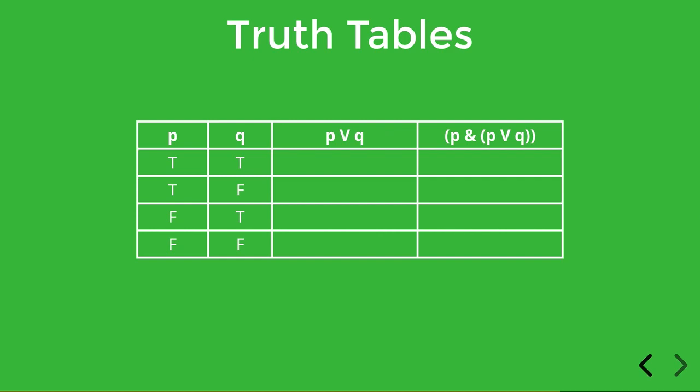So let's look at this example. To get the value of the last column, P and P or Q, we first need to know the value of P or Q, right, because P and P or Q is a conjunction between P on the one hand and P or Q on the other hand. We already have the values of P, that's kind of predetermined, so we first need to determine the values for P or Q.